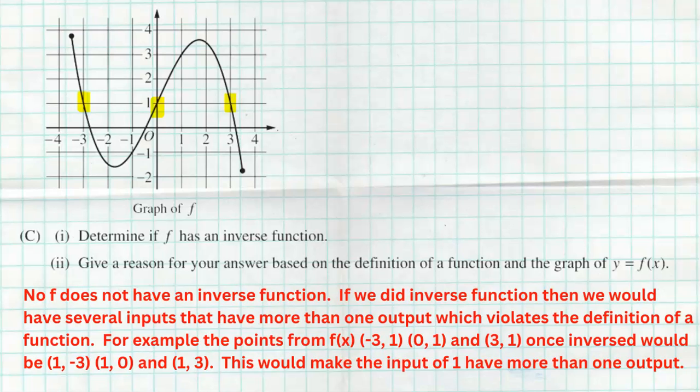If we were to inverse those points, what we do is we switch all of our x's and y's. That would produce three points of 1 comma negative 3, 1 comma 0, and 1 comma 3. If that was allowed to be an inverse function, we would have one input of 1 with three different outputs: negative 3, 0, and 3. That violates the definition of a function. We can't have one input leading to three different outputs.